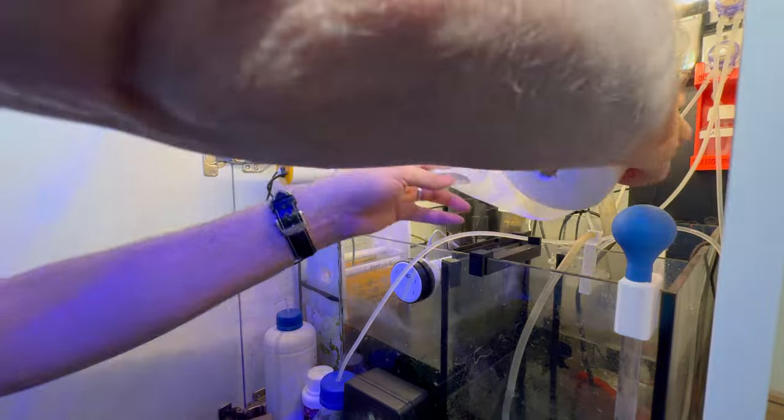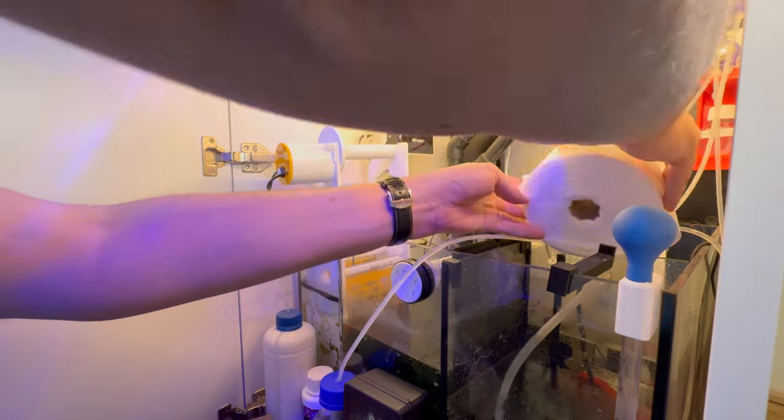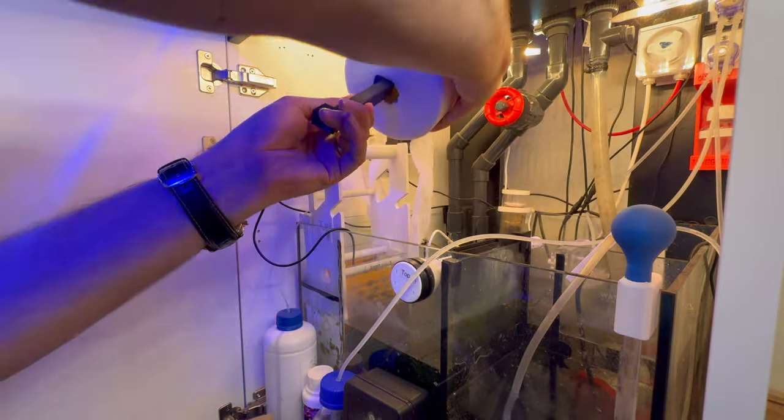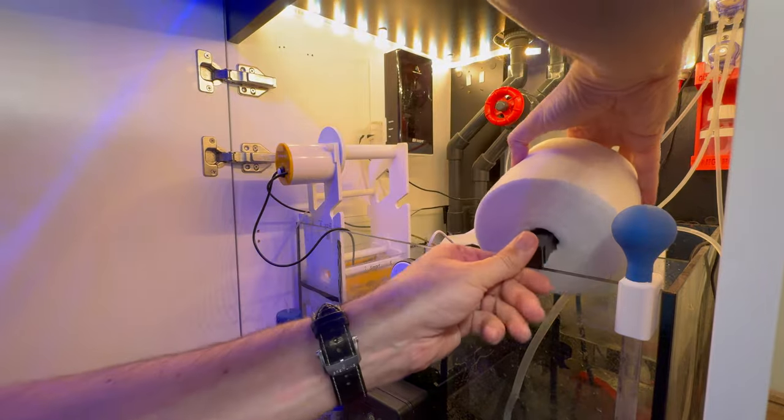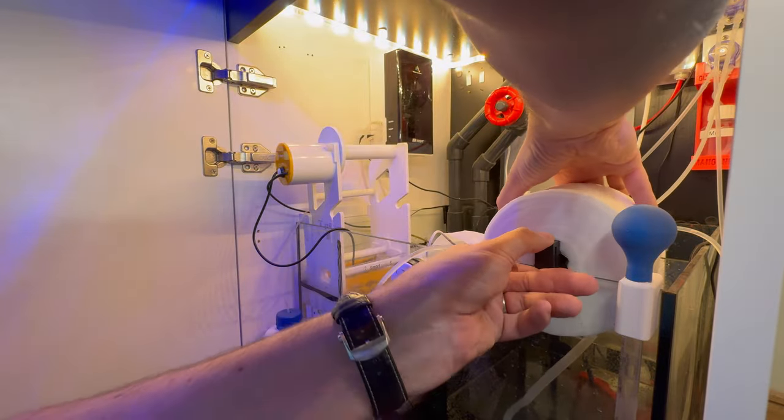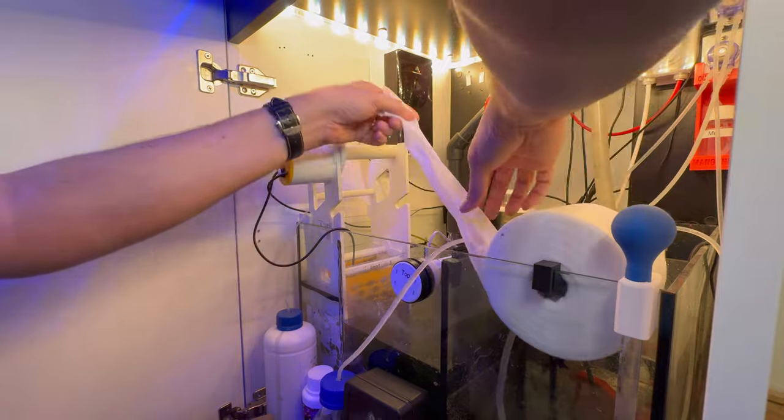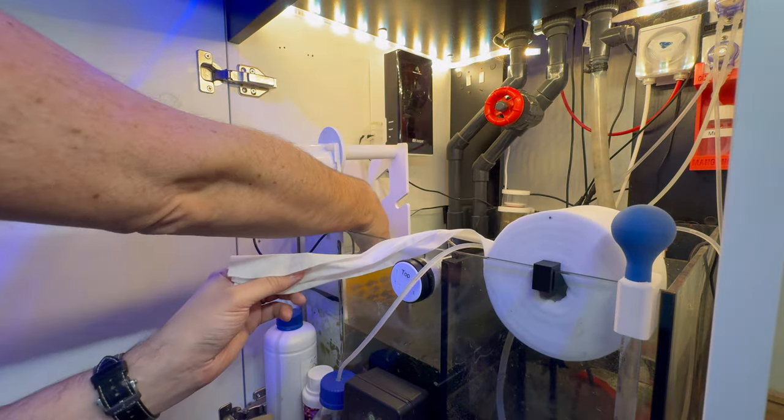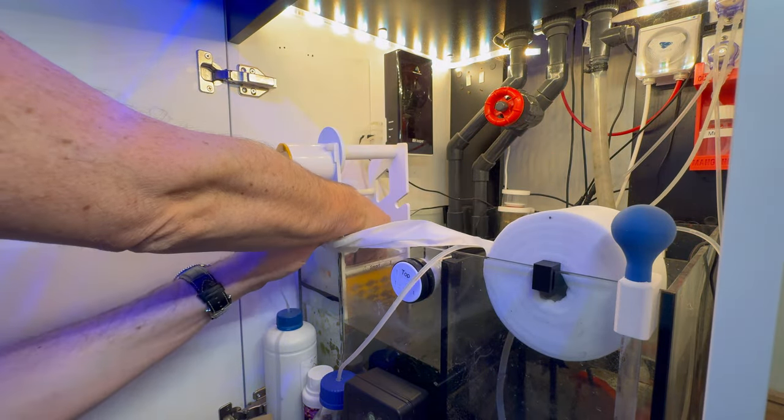One of the fiddly parts with this is because my roller is not facing forward, it's not facing the front of my sump, it's a little bit fiddly to find somewhere to rest the new roll while you're putting it in place. I've 3D printed this little bracket that holds the roll because otherwise I don't really think I'd have anywhere to put it.